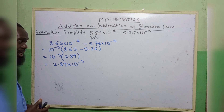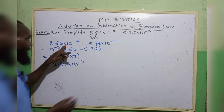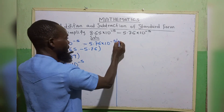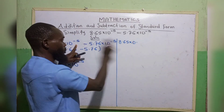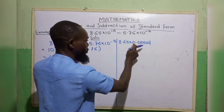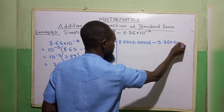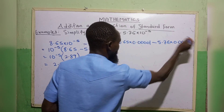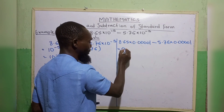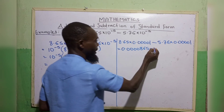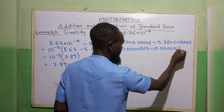But if you want to use the method of ordinary form, as we did in our last class, you change this to ordinary form. We have 8.65 times 10 to the power minus 5, which becomes 0.0000865, minus 5.76 times 10 to the power minus 5, which becomes 0.0000576.